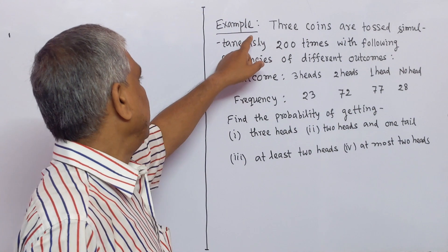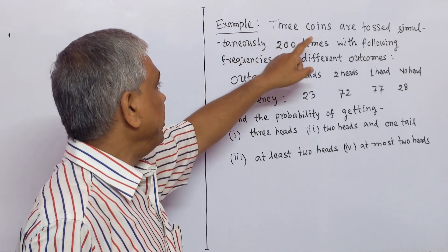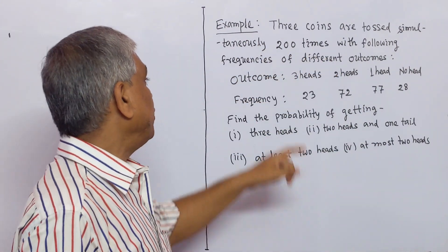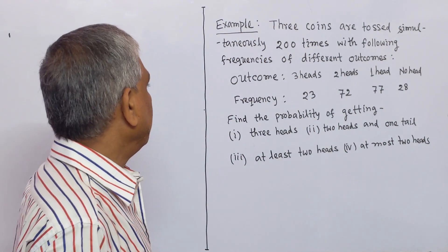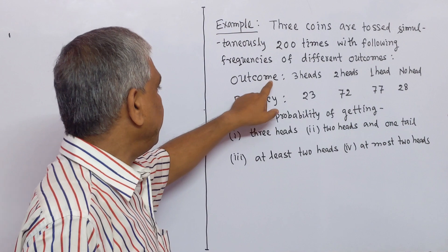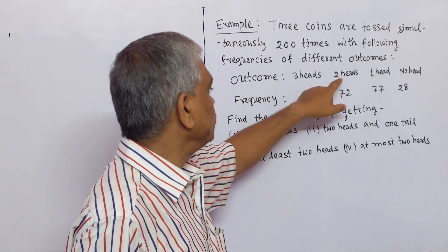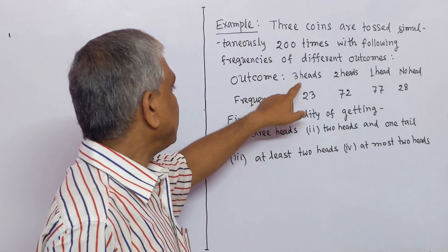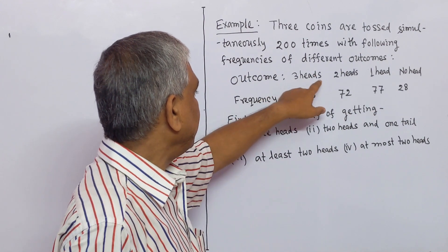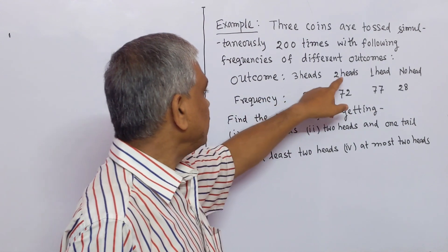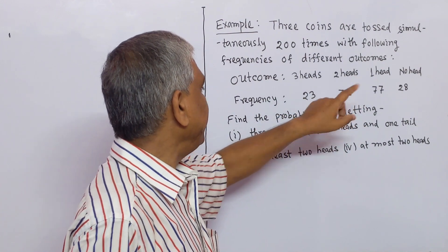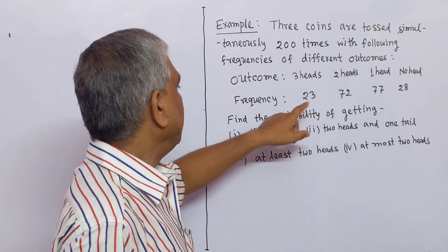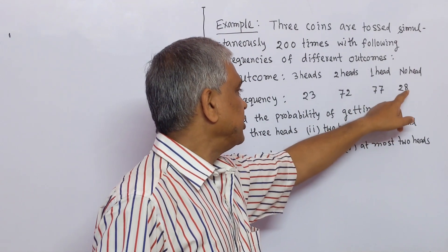Now we will give an example. Three coins are tossed simultaneously 200 times with the following frequencies of different outcomes. The outcomes and their frequencies are: 3 heads — frequency 23, 2 heads — frequency 72, 1 head — frequency 77, no head — frequency 28.